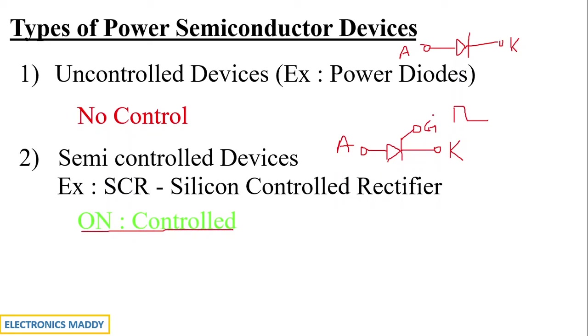Whereas you will not be able to control this to turn these devices off and hence you have no control to turn this off straight away. You need external commutation circuits to do that. And that is why these come under semi-controlled devices as you're only able to control the turning on of these type of devices.